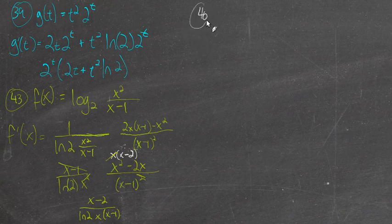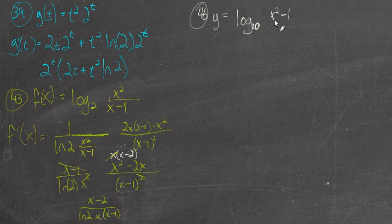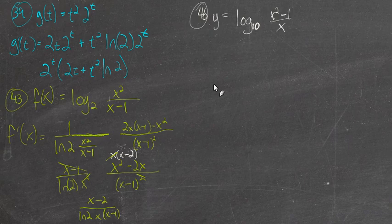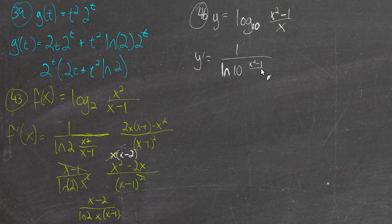Let's jump down to 46. y equals log base 10 — when we put 10 as the base of the log, we call that the common log. That really doesn't do anything other than give it a special name. So this is the same as anything else, it just has a base of 10. y prime will be 1 over the natural log of the base, that's the natural log of 10, times this function x squared minus 1 over x, times the derivative of this function.